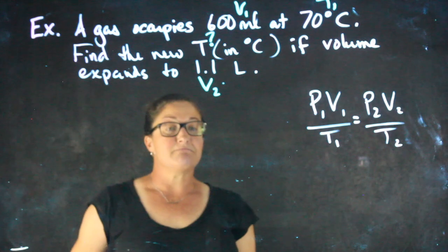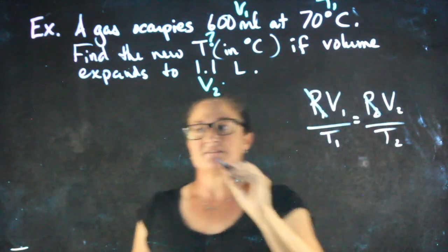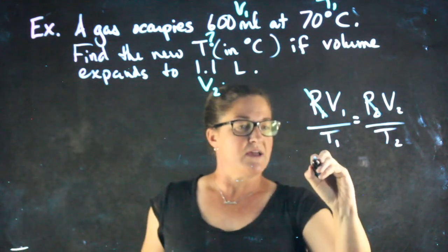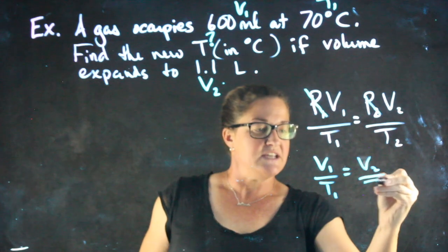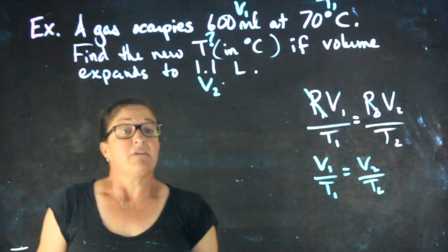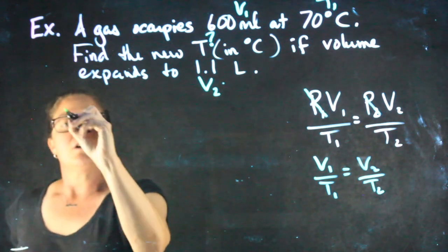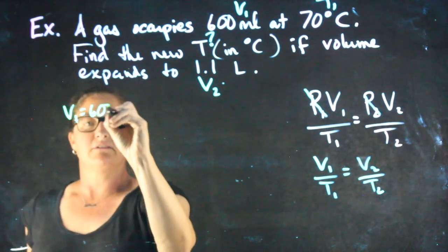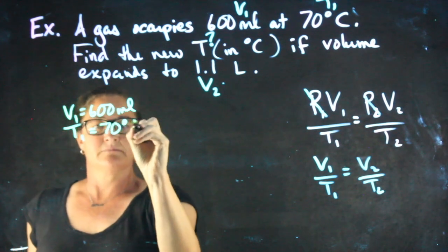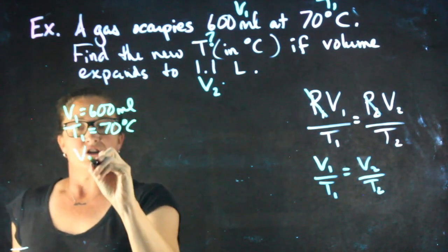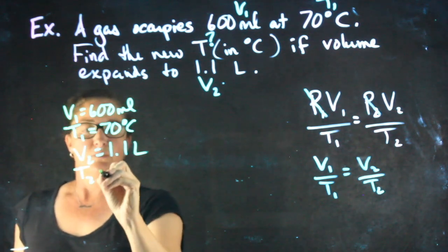See how pressure isn't mentioned? If pressure isn't mentioned, we assume it's constant and it disappears from the combined gas law. So what we're working with becomes V1 over T1 equals V2 over T2. Before I plug stuff into this formula, I need to take a close look at my units. So V1 is 600 milliliters. T1 is 70 degrees Celsius. V2 is 1.1 liters. T2 we're looking for.